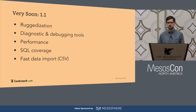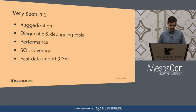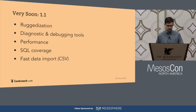Most of the new features in 1.1 are related to operational things — more administrative tools than high-profile features. But we do have one big one: a fast CSV importer which uses the same framework as the enterprise backup and restore functionality. We're making this available in the free version of the product because it's important for everyone to be able to get their data into CockroachDB to even start trying it out.